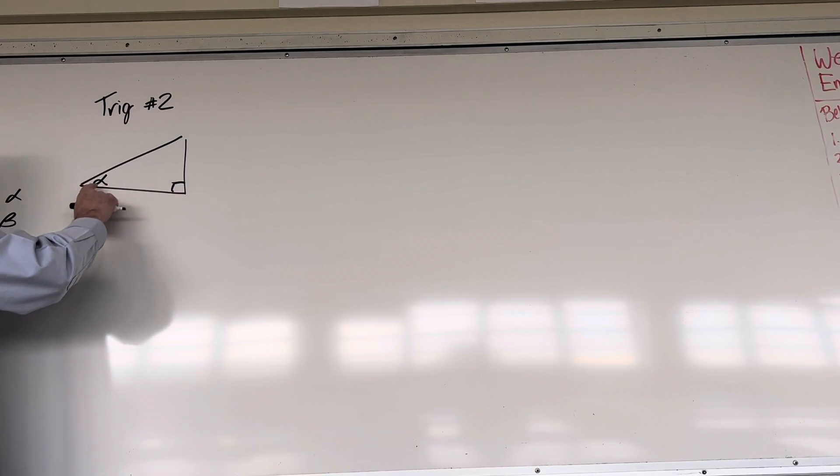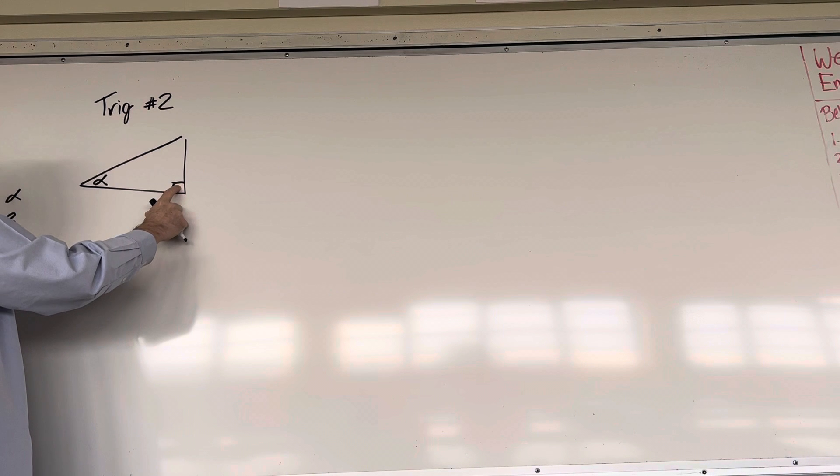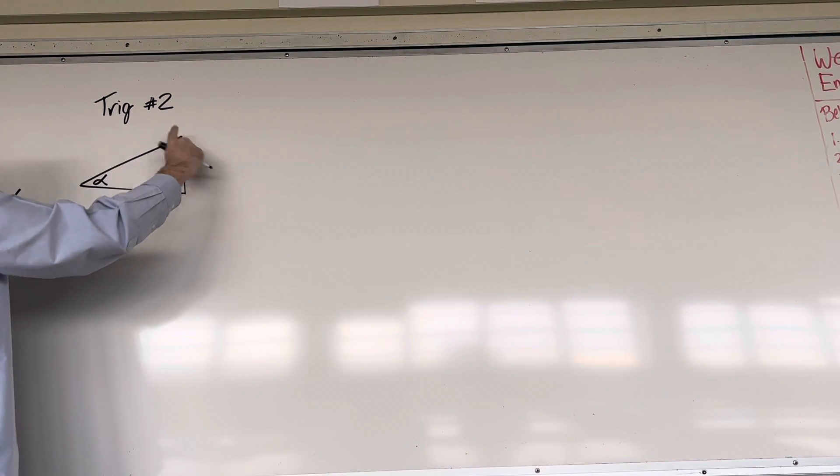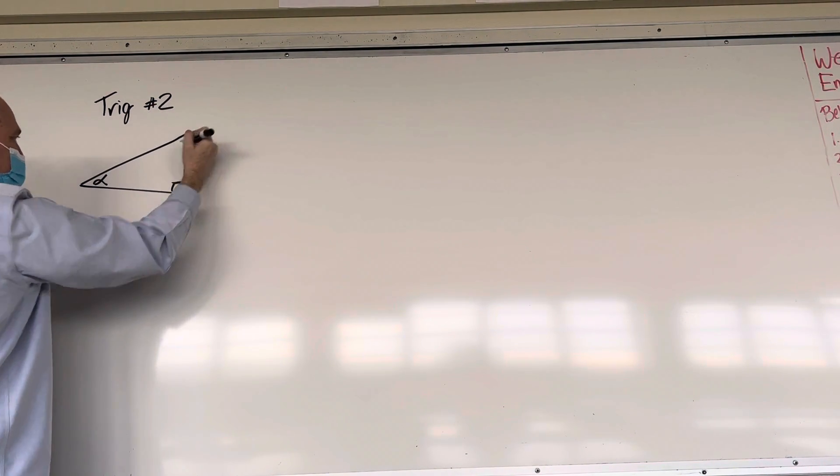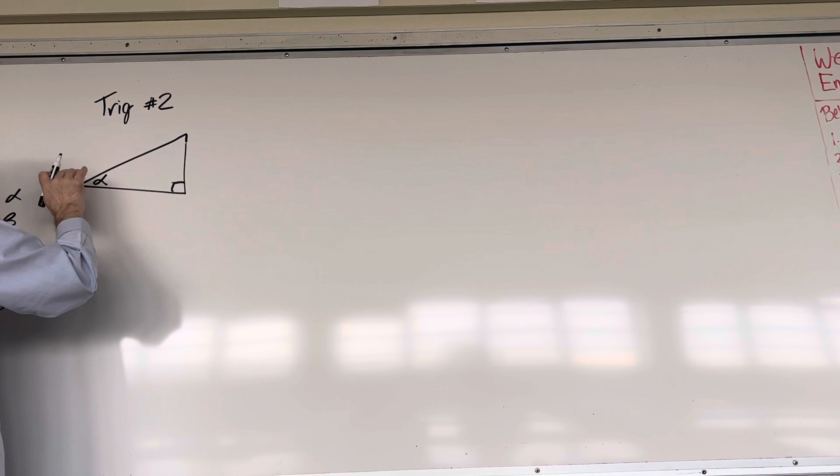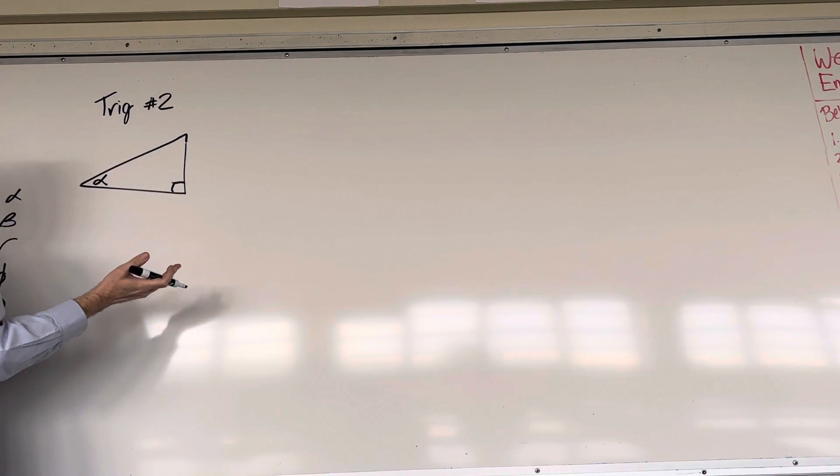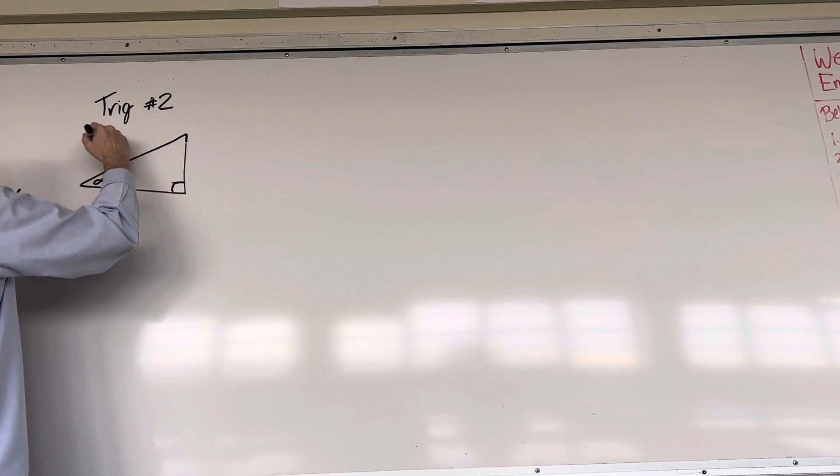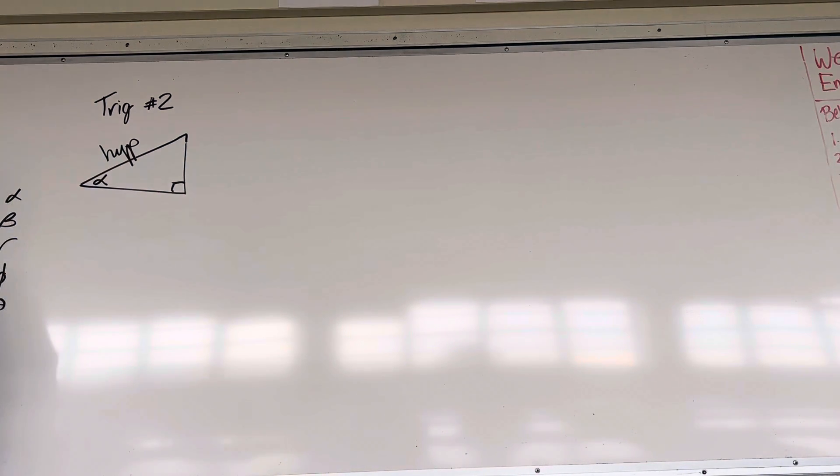Now, this angle becomes a reference angle. This is the angle we're interested in. We're not interested in this because we know it's 90, so it's either going to be this one or this one. There are three sides to the triangle. They have names. The longest one is the hyp, which is short for hypotenuse. Everybody say hypotenuse. It's spelled hypotenuse, but we say hypotenuse.